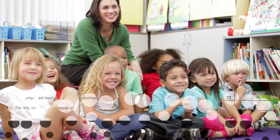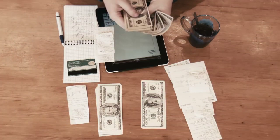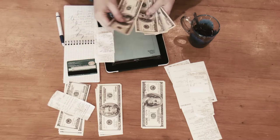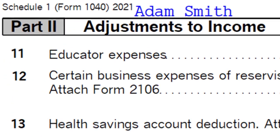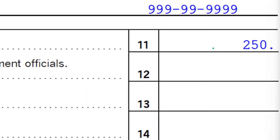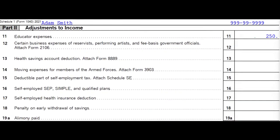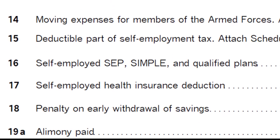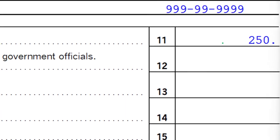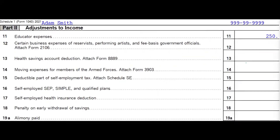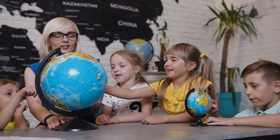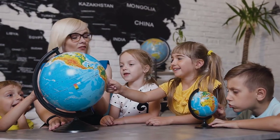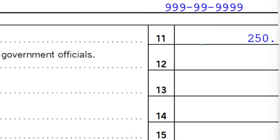If an educator had personal expenses they spent on their job, those could go toward the educator expenses deduction. There's a cap at $250, which is pretty low. Most of the time, if you have an educator, you can assume they've hit that cap spending their own money on supplies. They should be tracking receipts to justify the $250 in case of an audit, but generally it's almost automatic.